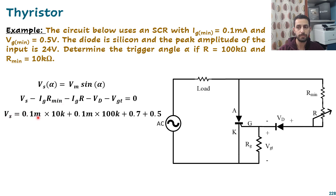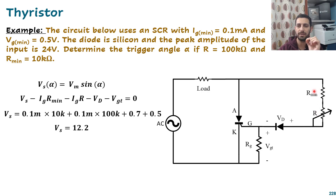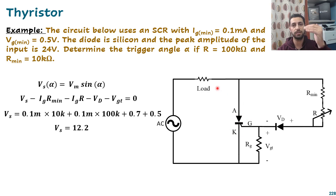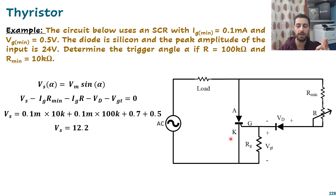Computing: 0.1 mA × 10 kΩ + 0.1 mA × 100 kΩ + 0.7 V + 0.5 V gives V_s = 1 + 10 + 0.7 + 0.5 = 12.2 V. So the voltage grows until 12.5 V, which pushes 0.1 mA through the network and turns on the thyristor. This is the minimum required trigger voltage. Once triggered on, the thyristor stays on until the negative half cycle arrives.